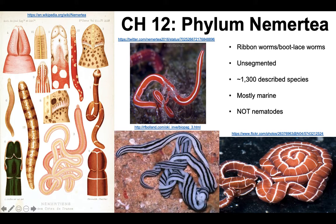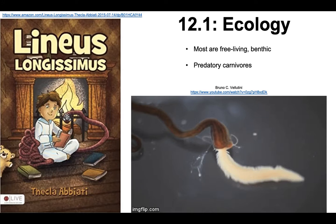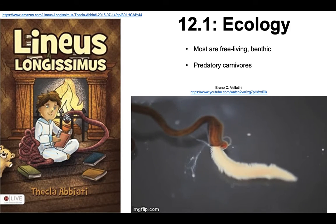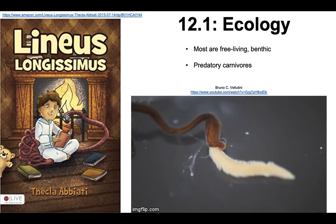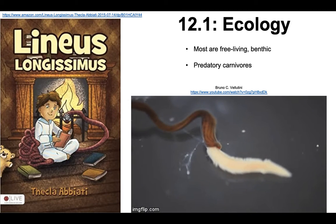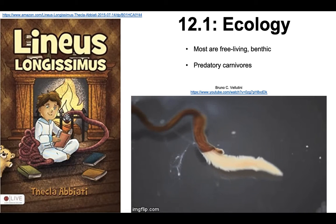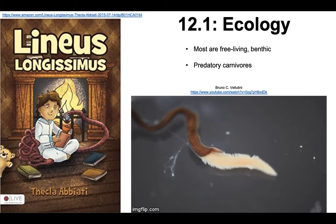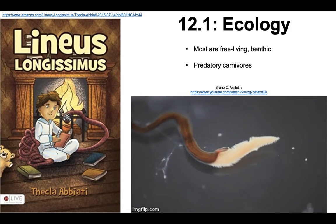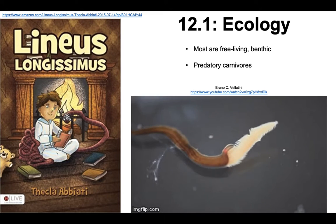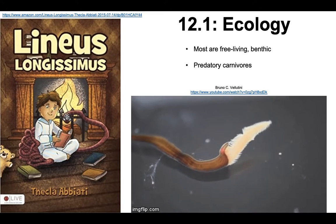Here's just a little showcase of the biodiversity within the nemertians. Most of these worms are free-living and benthic, which means they live near the bottom of open water systems. They're mostly marine, so this is mostly in open ocean systems.